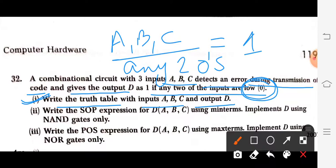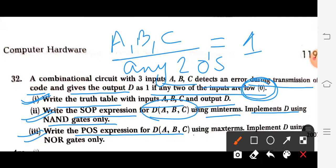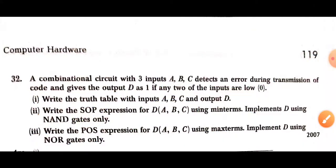For this question, first we need to write out the truth table with inputs A, B, C and output D. Second, write the SOP expression for D using minterms. Third, implement D using NAND gates only. The fourth part is write the POS expression for D using maxterms and implement D using NOR gates only.